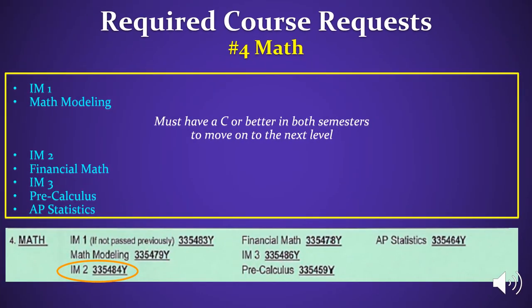Section 4 is Math. Please choose a math course from the options below. Please note, in order to move on to the next level of math, you need to earn C's or better in both semesters of your previous math course. If you want to take two math courses in one school year, please circle one here, and then below on line 6, 7, or 8, please write in your next math course.